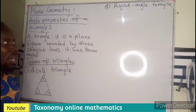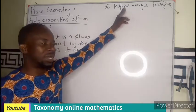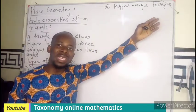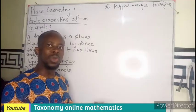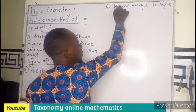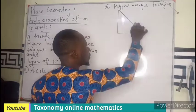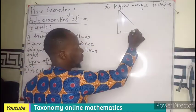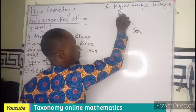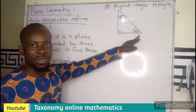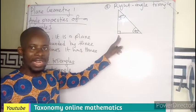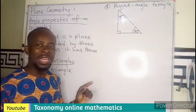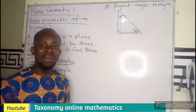We also have a right angle triangle. A right angle is an angle that is exactly 90 degrees. So a right angle triangle is a triangle that has one of its angles equal to 90 degrees. The remaining two angles would be 45 degrees each, since 45 plus 45 plus 90 gives us 180.